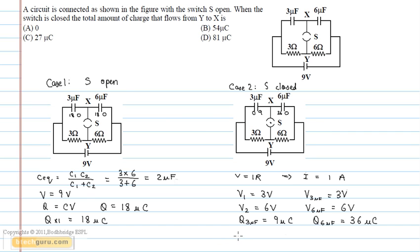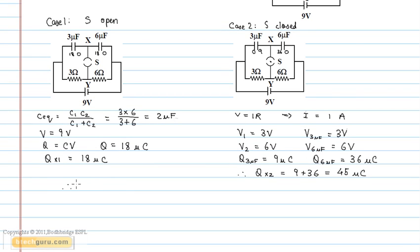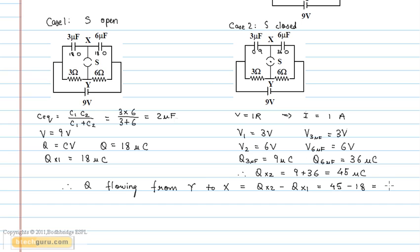So the total charge at the X terminal is 9 microcoulombs plus 36 microcoulombs, which is equal to 45 microcoulombs. The total charge that flows from the Y terminal to the X terminal when the switch S is closed is QX2 minus QX1, that is equal to 45 microcoulombs minus 18 microcoulombs, which equals 27 microcoulombs.